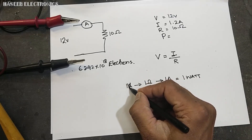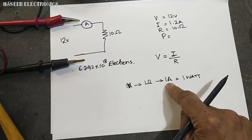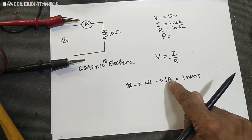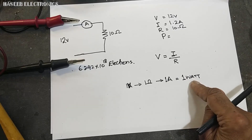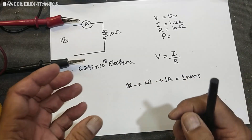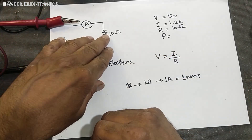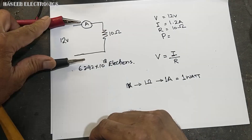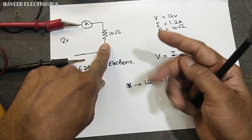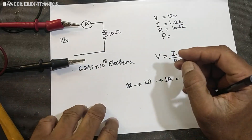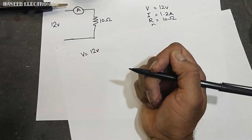If you apply one volt to a one ohm resistance it causes one ampere current to flow, and the power generated is one watt. Power is the efficiency of voltage to produce effective work in a conductor. When we apply one volt to a one ohm resistance it dissipates one watt — generating heat. Power is the ability to do work.